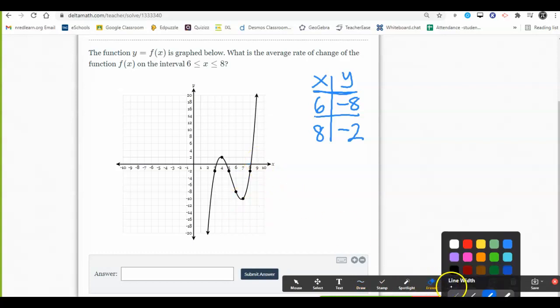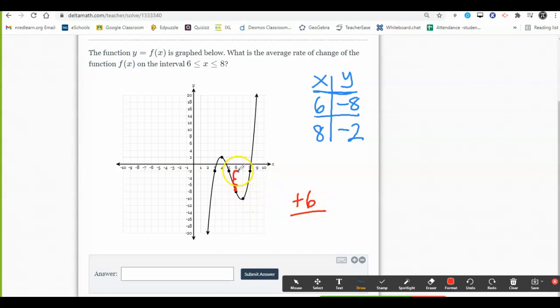When I look at what the rise and run is between those two points, I can count those boxes. I can count those unit boxes that are there on the graph. Like up 2, 4, 6, and then over 1, 2. I could do it like that.